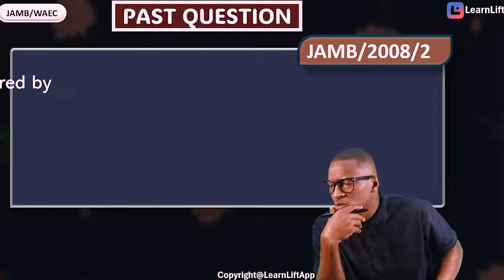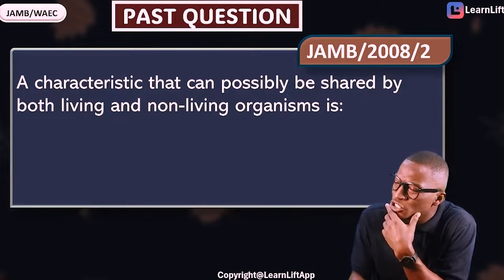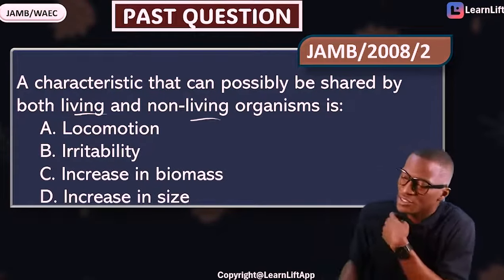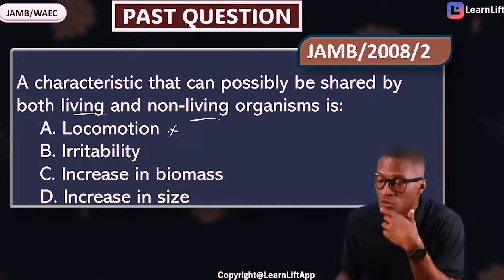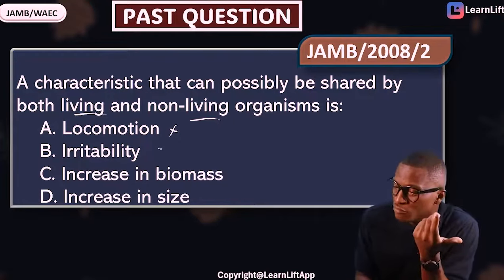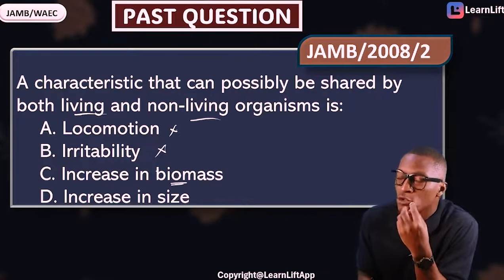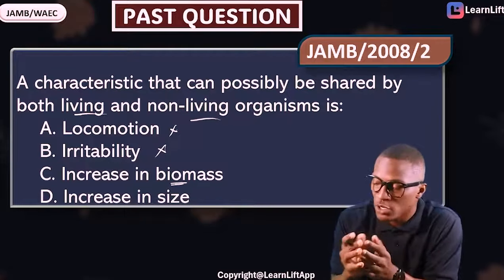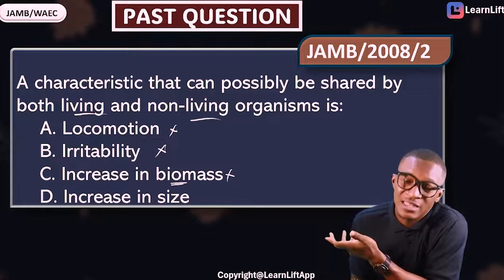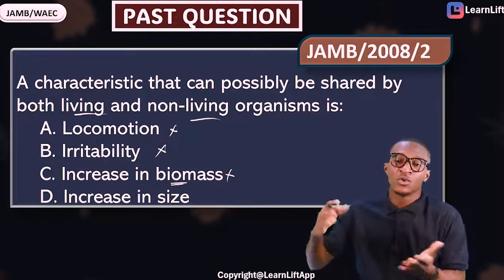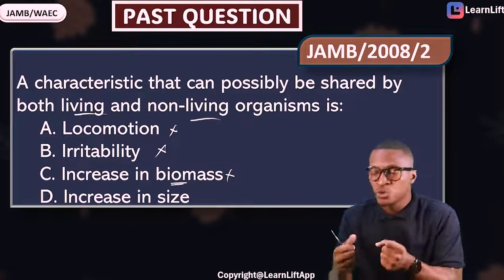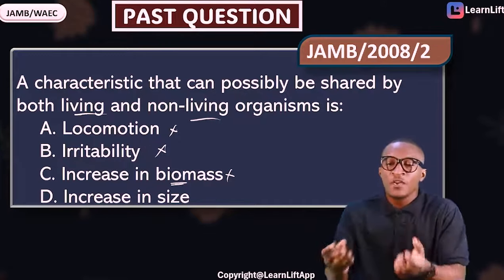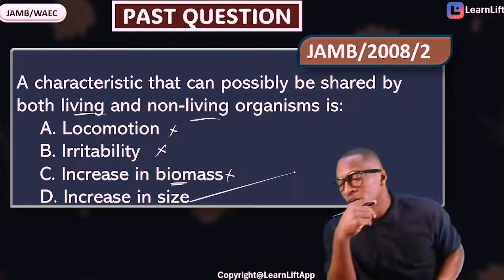JAMB 2008 question 2: a characteristic that can possibly be shared by both living and non-living things — option A) locomotion, B) irritability, C) increase in biomass, D) increase in size. Non-living things do not move, so locomotion is out. Non-living things do not respond to stimuli, so irritability is out. Biomass refers to the body size of a living organism, so non-living things cannot have biomass. However, both living and non-living things can increase in size — heat or wind can cause non-living things like metal or foam to increase in size. So the answer is D) increase in size.